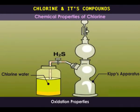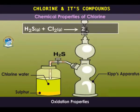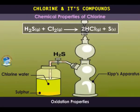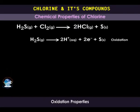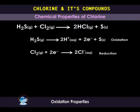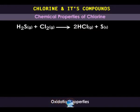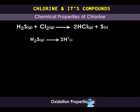When a gas jar of hydrogen sulfide is inverted over a jar of chlorine, a yellow deposit of sulfur and steamy fumes of hydrogen chloride are seen. Here, chlorine is reduced to hydrogen chloride and hydrogen sulfide is oxidized to elemental sulfur. By losing two electrons to form elemental sulfur, hydrogen sulfide is oxidized. The two electrons are gained by chlorine, which is reduced to chloride ions — chlorine is the oxidizing agent.